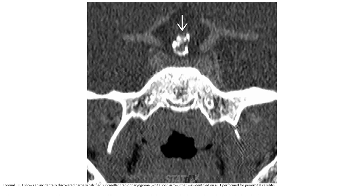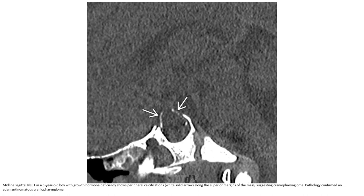Contrast-enhanced CT shows an incidentally discovered partially calcified suprasellar craniopharyngioma identified on a CT performed for sinusitis. Mid-line sagittal non-contrast CT in a child with growth hormone deficiency shows superior peripheral calcification along the superior margin of the mass, suggesting craniopharyngioma. Pathology confirmed adamantinomatous craniopharyngioma.